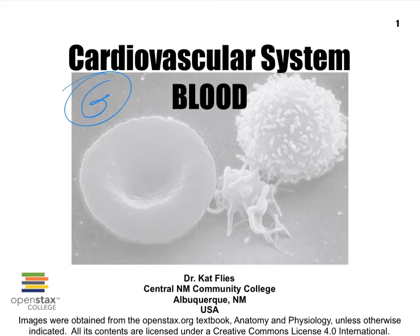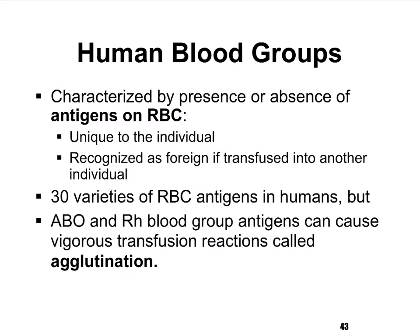Hi, this is Dr. Fleece from Central New Mexico Community College. This is my last video on the blood, and I will focus here on blood groups. There are about 30 different kinds of blood groups amongst humans, and what determines a blood group is the kind of antigen present or not present on red blood cells. We're going to only focus on two of the 30 blood groups: the ABO blood group and the so-called rhesus blood group. The RH stands for rhesus because this is a protein that was first discovered in rhesus monkeys.